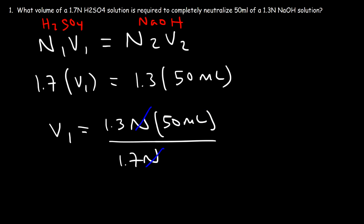So it's 1.3 times 50 divided by 1.7. So the volume of sulfuric acid that's required to complete this reaction is 38.2 milliliters. And so that's all you have to do for a problem like this.